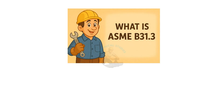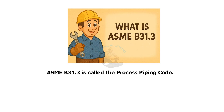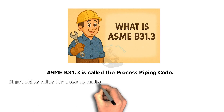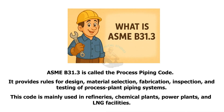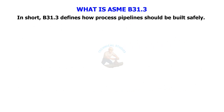What is ASME B31.3? ASME B31.3 is called the Process Piping Code. It provides rules for design, material selection, fabrication, inspection, and testing of process plant piping systems. This code is mainly used in refineries, chemical plants, power plants, and LNG facilities. In short, B31.3 defines how process pipelines should be built safely.